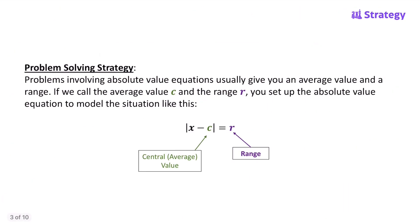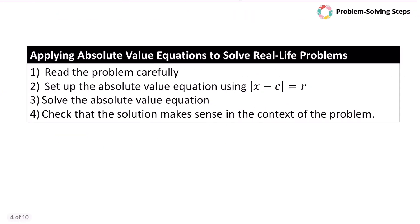Here's our strategy. Problems that involve absolute value equations usually give you an average value and a range. If we call the average value C and the range R, we can set up the equation as the absolute value of X minus C equals R. So the steps are: read the problem carefully, set up the absolute value equation using |X - C| = R, solve, and check that your solution makes sense in context.